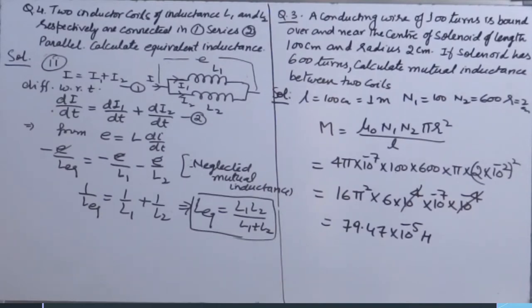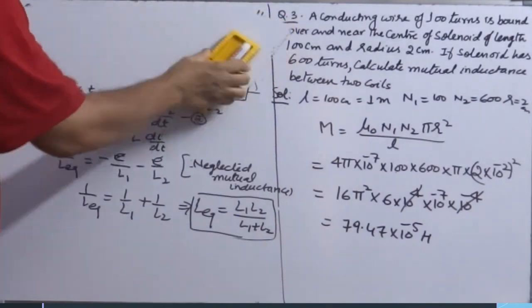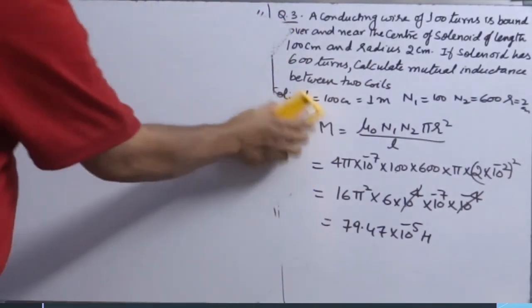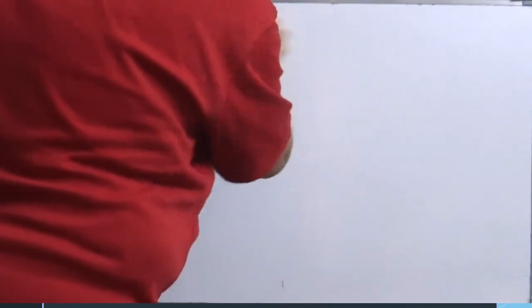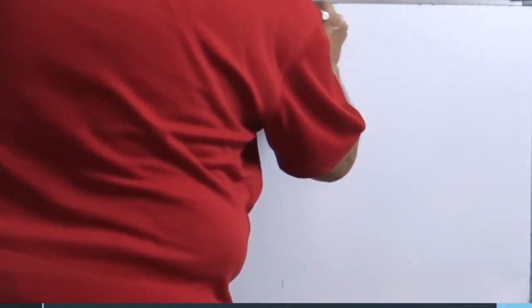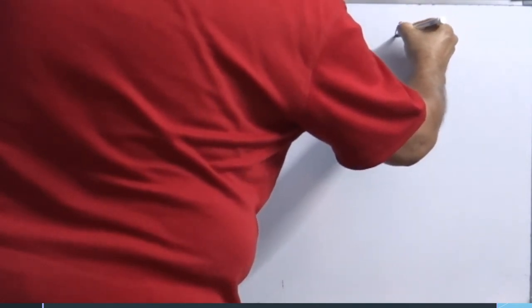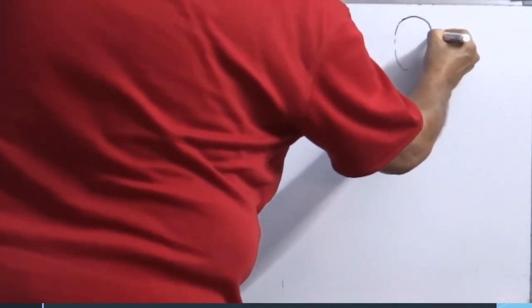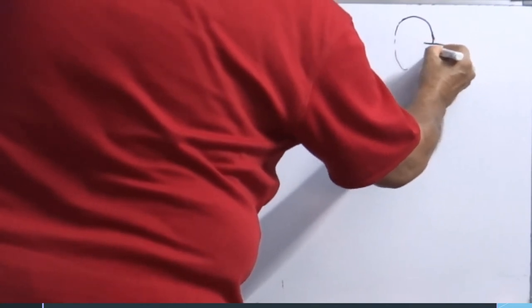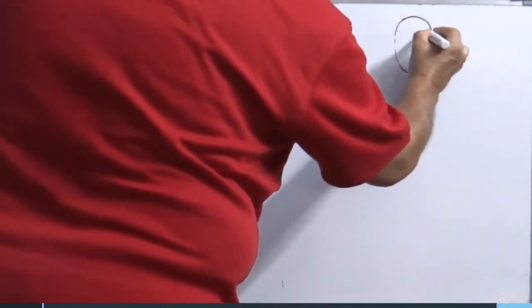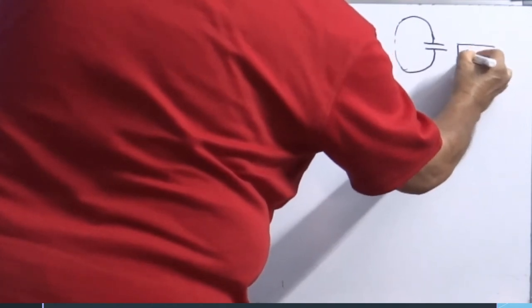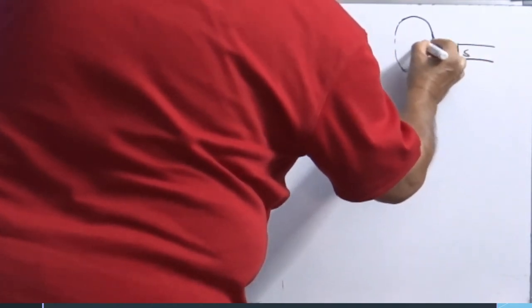Many more problems you can see. Conceptual problems are also very frequently asked. Let's see question number 5, conceptual. This is the coil which is connected with two parallel plates of capacitor. And towards this face, south pole of magnet is moved.